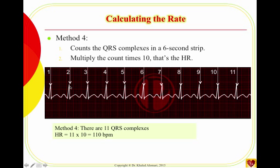The last and easiest method is to count the number of QRS complexes in a six-second strip and multiply by 10. The strip must be six seconds, meaning 30 big boxes, since each big box is 0.2 seconds. Just count all the QRS complexes in those 30 big boxes and multiply that total by 10 to get the heart rate.